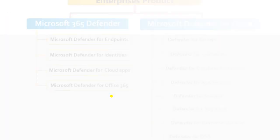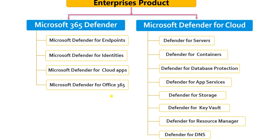Now let's see how Enterprise products are categorized. Microsoft categorizes them into two parts: Microsoft 365 Defender and Microsoft Defender for Cloud. Under Microsoft 365 Defender we have four categories: Microsoft Defender for Endpoints, Microsoft Defender for Identities, Microsoft Defender for Cloud Apps, and Microsoft Defender for Office 365.